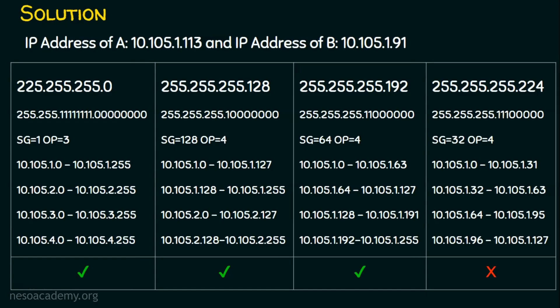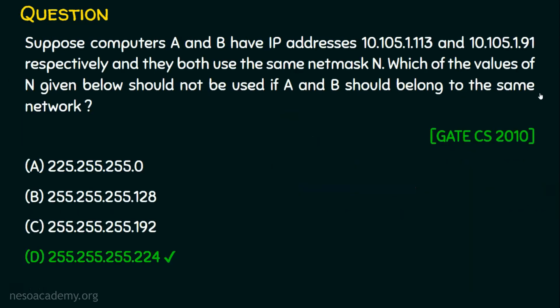So we got the answer. In this question, we are required to find which subnet mask should not be used. The subnet mask that should not be used is 255.255.255.224 — option D is the right answer. If we use this subnet mask, A and B will not belong to the same network. This is one of the ways to solve the problem.